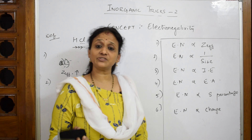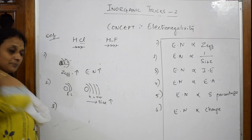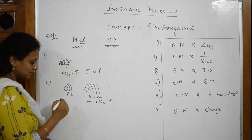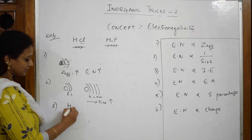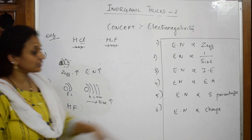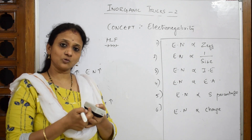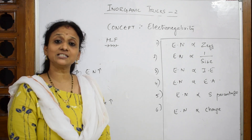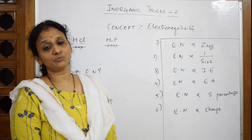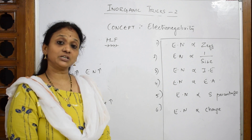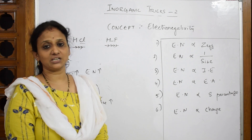Electronegativity and ionization enthalpy — same story. If the electronegativity difference between two elements is very, very less, it is trying to drag the electron very closely. When the element is very close, I have to use more energy. If the ionization enthalpy value difference is more, then ionization enthalpy values also change accordingly.